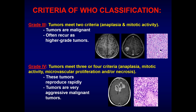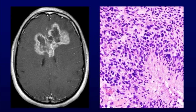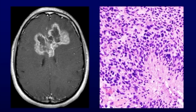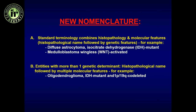Grade 4 tumors meet three or four WHO criteria — anaplasia, mitotic activity, endothelial proliferation, and/or necrosis and hemorrhage. Classically this would be glioblastoma multiforme, which has central necrosis and peripheral enhancement. Here is one crossing the midline through the corpus callosum, with a thick rind of enhancement and central necrosis — these are very aggressive, tend to recur, are often fatal, and rapidly growing with large zones of transition and peritumoral edema. This was the WHO histological classification, to which in 2016 genetic classification was added.